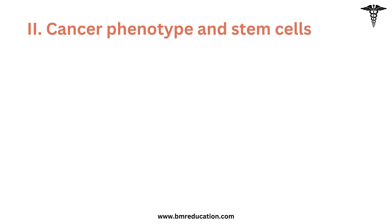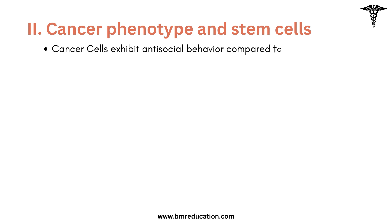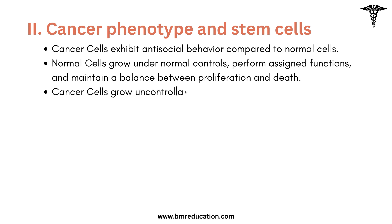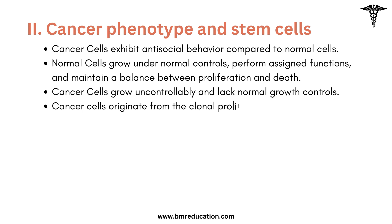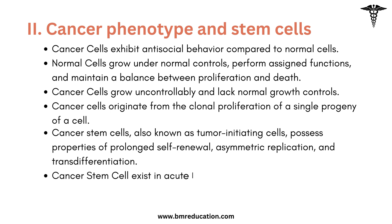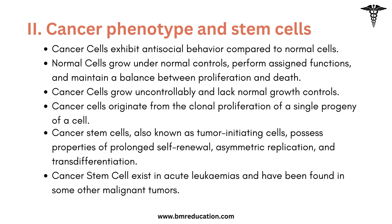Let's look into cancer phenotype and stem cells. Cancer cells exhibit antisocial behavior compared to normal cells — they are like the rebels of the cellular world. They ignore the rules normal cells follow. Normal cells grow in a controlled manner, do their job, and balance growth with death. But cancer cells multiply without restraint, ignoring signals to stop or die. They start from one rogue cell that multiplies clonally. There is also a special group called cancer stem cells, which can keep renewing themselves, create different cell types, and are found in diseases like acute leukemias and other cancers. These cells are like the masterminds behind the cancer's persistence and spread.